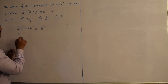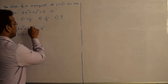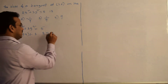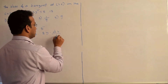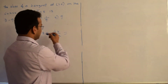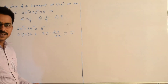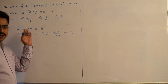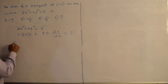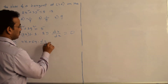Differentiating both sides with respect to x: 2 into derivative of x² means 2x, plus 3 into derivative of y² — since y is a function of x — gives 2y times dy by dx, which equals the derivative of 5 with respect to x, which is 0, since it is a constant. So this implies 4x plus 6y dy by dx equals 0.